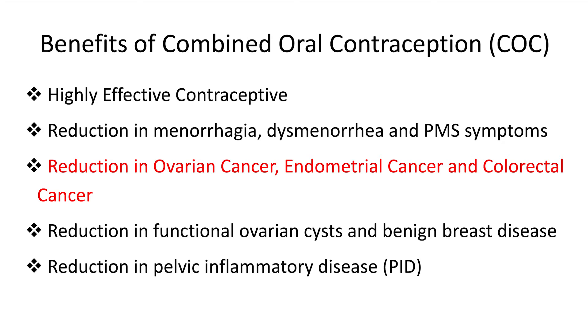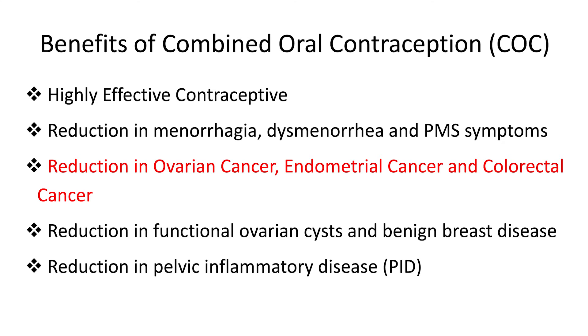Question four: what are the benefits of the combined oral contraceptive pill? First and foremost, it is an extremely effective contraception. It is also very effective in reducing menstrual bleeding and menstrual pain — that is, menorrhagia and dysmenorrhoea — and can reduce symptoms of pre-menstrual syndrome. COC use is associated with a reduction in three cancers: ovarian, endometrial, and colorectal cancer. It is also associated with reduction in functional ovarian cysts, benign breast disease, and pelvic inflammatory disease, possibly due to thickening of cervical mucus diminishing the risk of ascending infection.